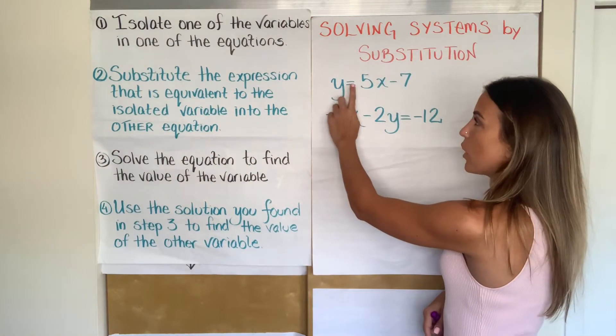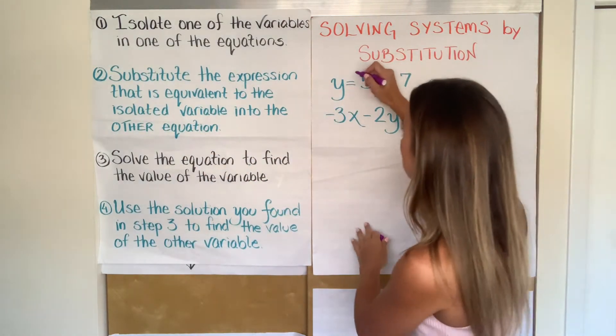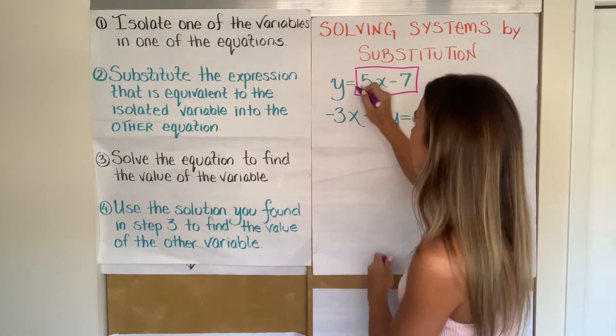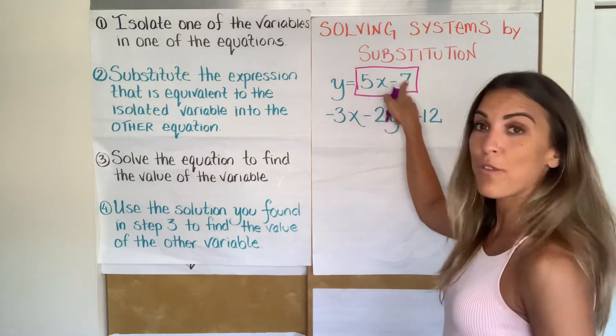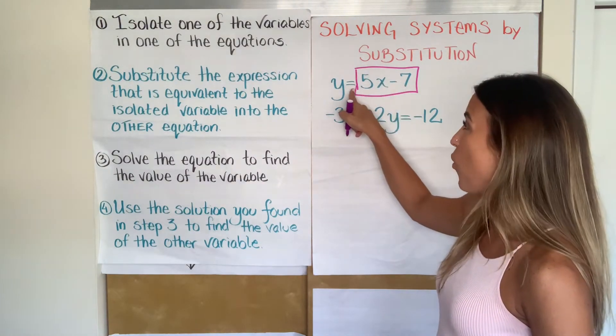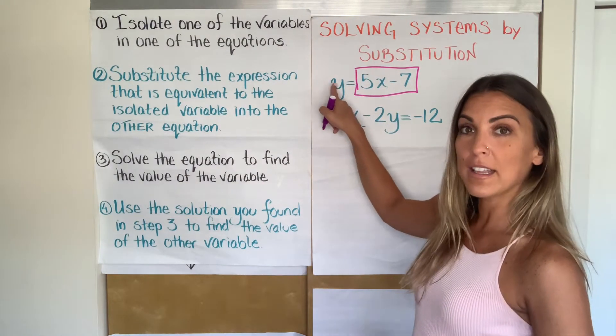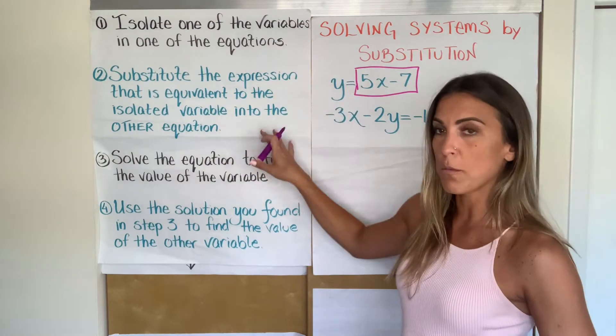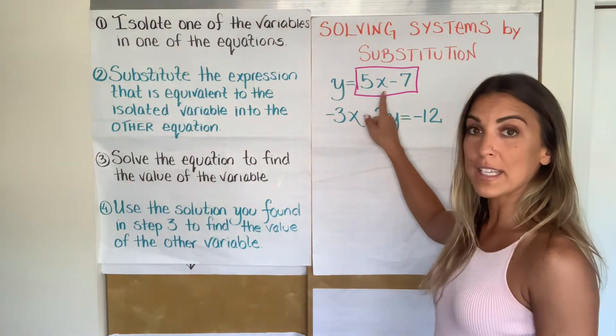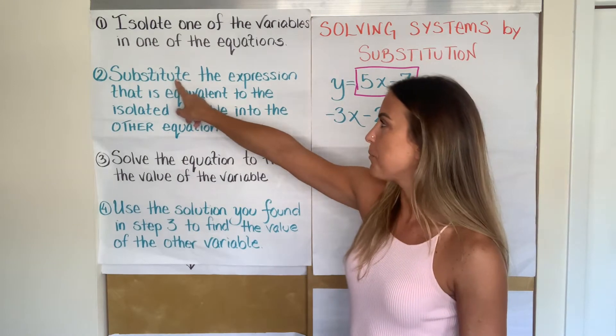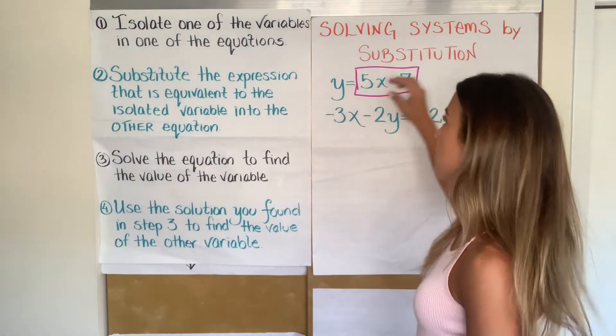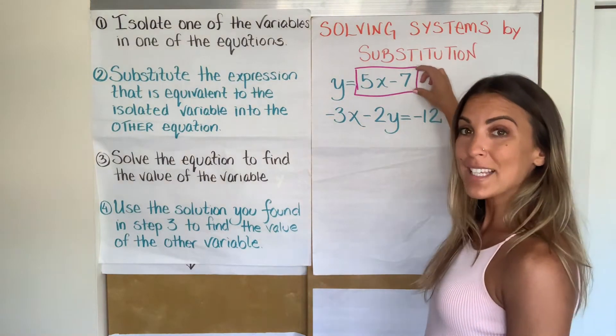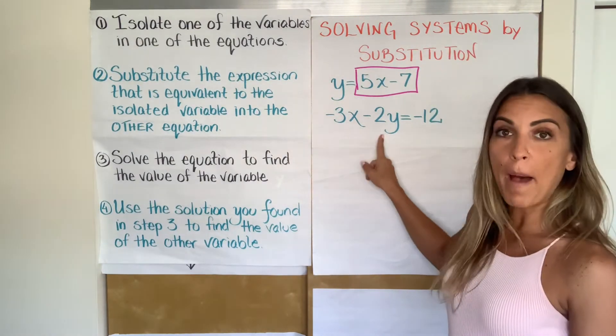So we're looking for what's the expression that's equal to Y. Well, Y is equivalent to 5X minus 7. So this expression right here is the one that number two is talking about. This expression 5X minus 7 is equivalent to the isolated variable. Hopefully all those words are making some sense now. And what it's asking me to do with this expression is to substitute it into the other equation.